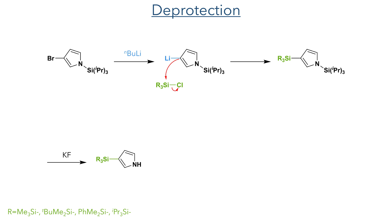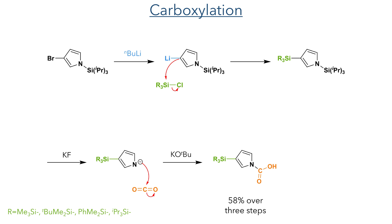Taking these forward, the N-triisopropylsilyl group was selectively deprotected using potassium fluoride, and this was then deprotonated using potassium tert-butoxide, forming an anion that was reacted with carbon dioxide, producing a carbamic acid upon workup, with a 58% yield over three steps.